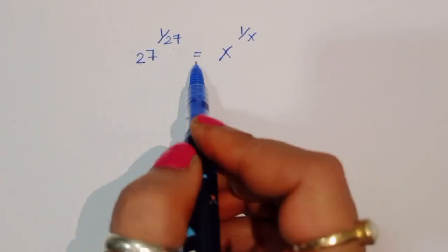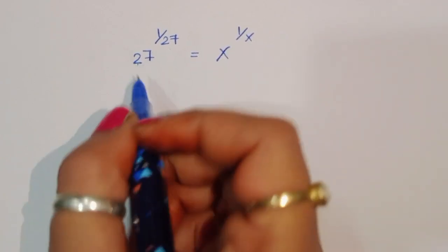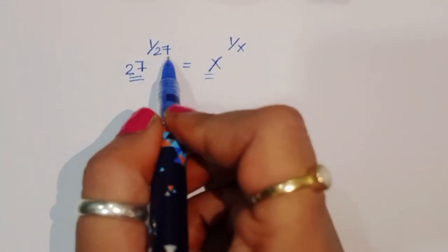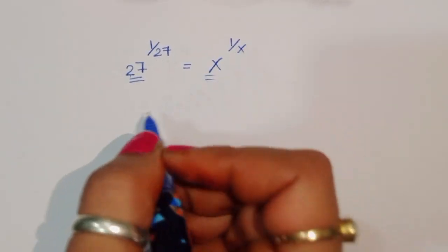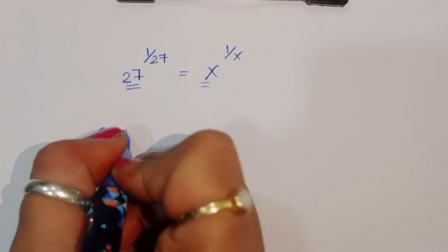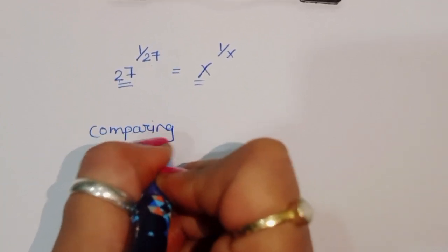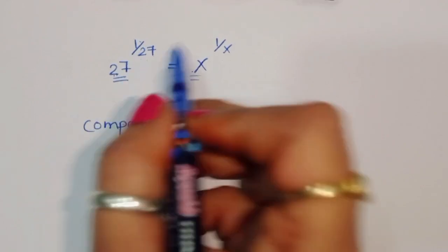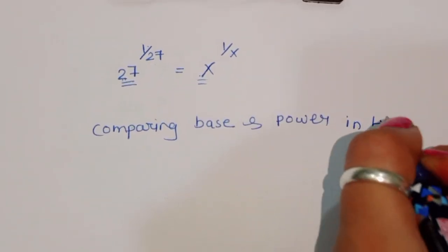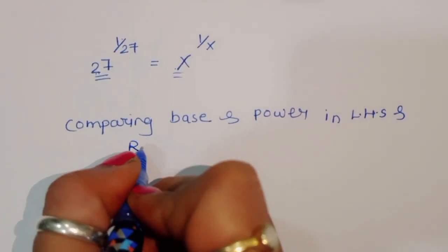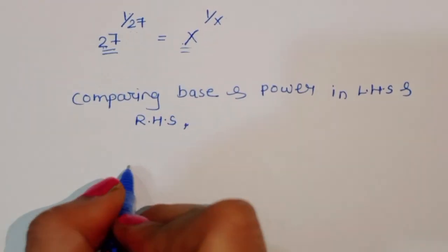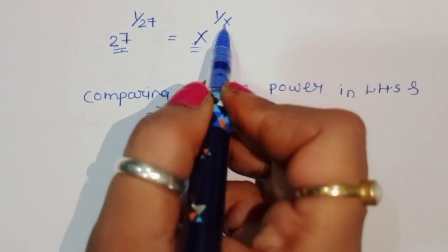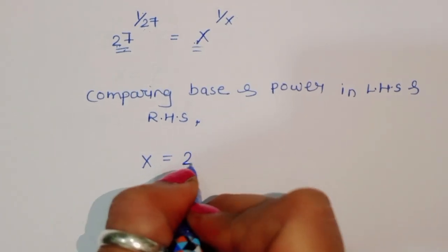So we have 27 power 1/27 is equal to x power 1/x. Comparing base and power on both LHS and RHS: the base is 27 on the left and x on the right, and the exponent is 1/27 on the left and 1/x on the right. Therefore x is equal to 27.